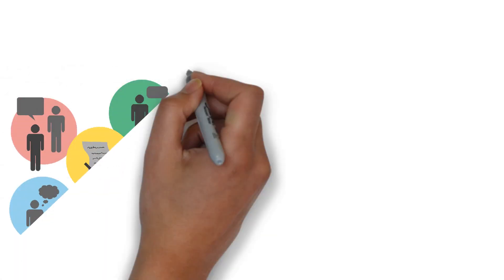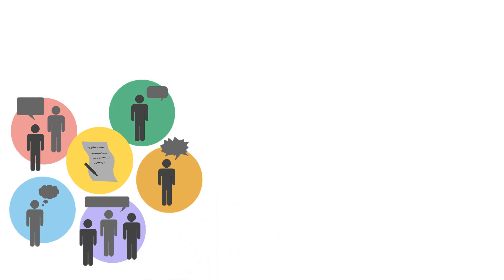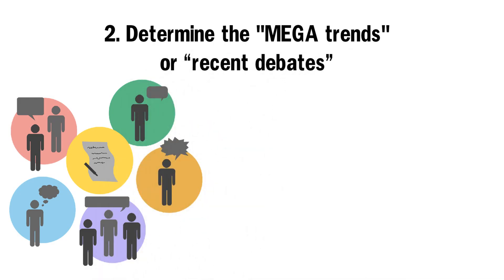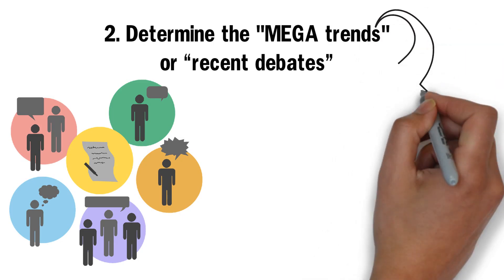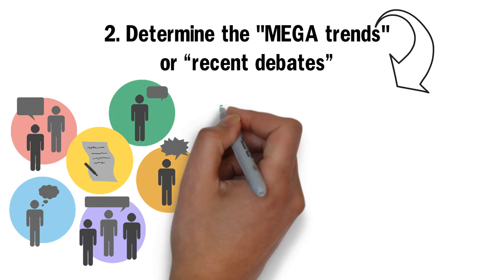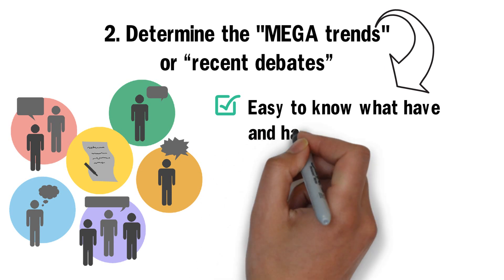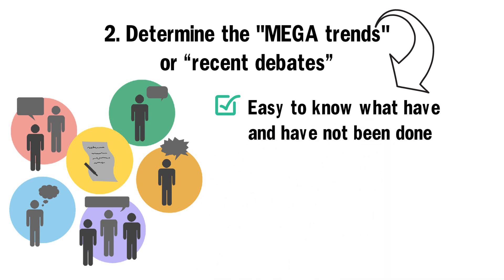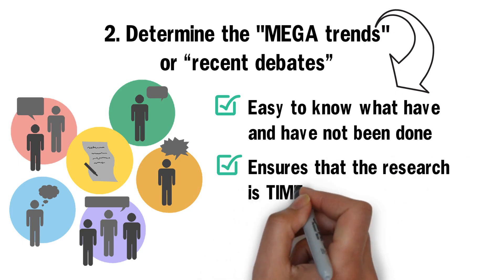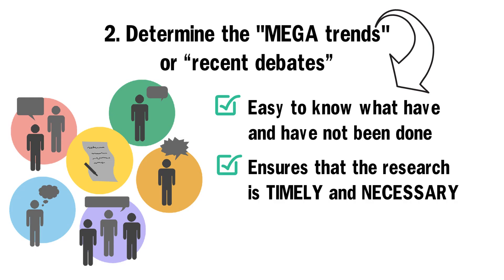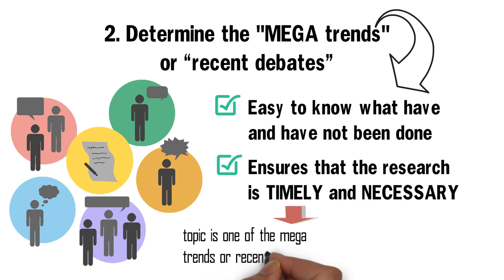The second technique is: once the researcher has chosen a topic she is passionate about, she now proceeds to determine the mega trends or recent debates in the chosen field of specialization. This is important because once we know the mega trends or recent debates in our chosen area of specialization, we can easily know what has and has not been done. Determining the mega trends or recent debates is also important because it ensures that our research is timely and necessary. A particular research is timely if the topic is one of the mega trends or recent debates in the field of specialization.